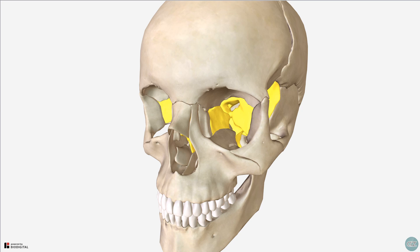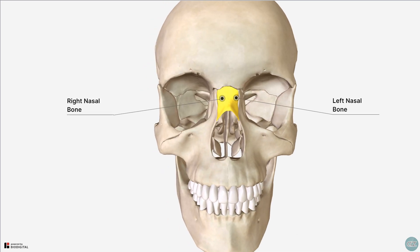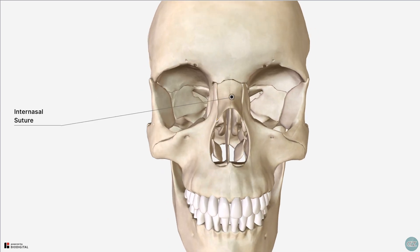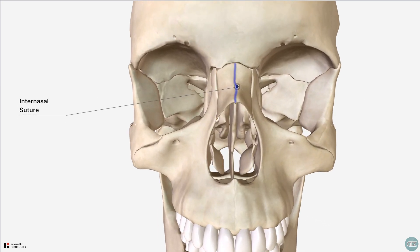Let's now take a look at how these bones are connected and at some of their key features. Starting from an anterior view of the skull, in the midline we have the nasal bones, which articulate with each other via the internasal suture. This point here is nasion, which is the intersection of the frontal and nasal bones. The articulation with the frontal bone is via the frontonasal suture.